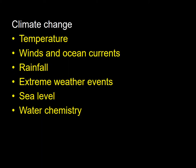Climate change causes changes in temperature, winds and ocean currents, rainfall, extreme weather events, sea level as well as water chemistry. I'm going to briefly go through each driver of change, tell you what's expected to occur and also what will happen to estuaries and estuarine fish.